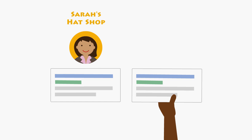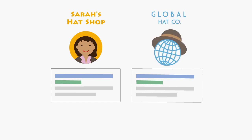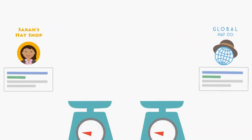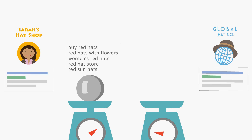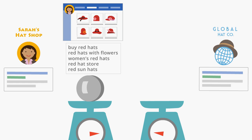Let's imagine that two advertisers are eligible to display an ad: Sarah's Hat Shop and Global Hat Co. Sarah's Hat Shop has set a $0.10 cost per click bid, and her ads generally have high quality scores. They're very descriptive, and when someone clicks on her ads, there's a good chance they see what they expect — in this case, red hats.